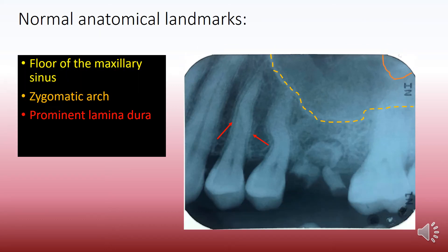The normal anatomical landmarks seen in this region are the floor of the maxillary sinus, the zygomatic arch which is shown by the orange line here, and of course prominent lamina dura seen in the first premolar.